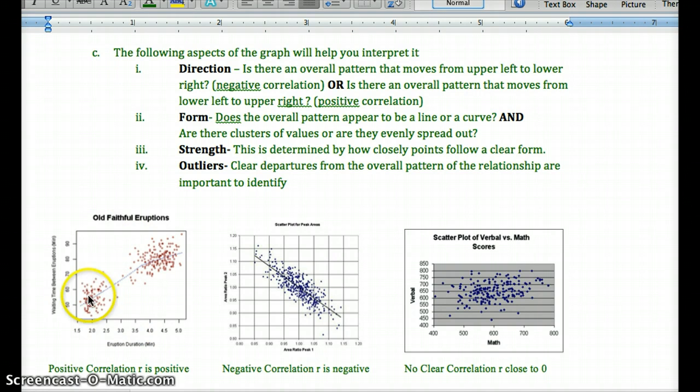So a positive correlation, we'd look for values increasing together, meaning as values of our x-axis here increase, so do values on the y-axis. And that would give us a best fit line that would have a positive slope, going from the lower left to the upper right.